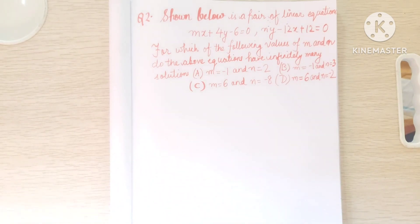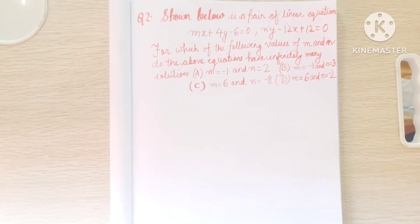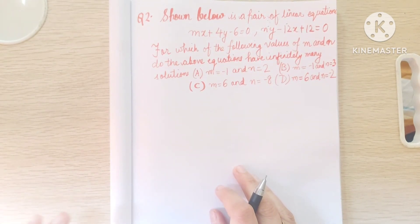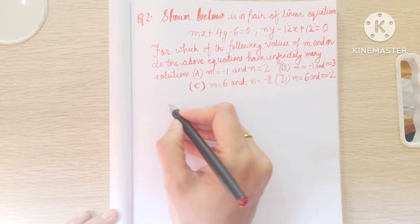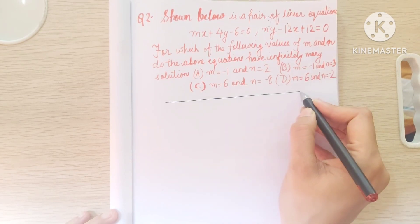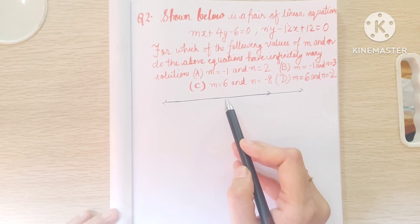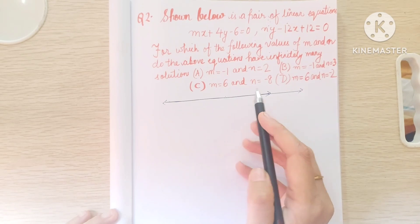Now let's start with question number 2. It says: 'Shown below is the pair of linear equations: mx plus 4y minus 6 equals 0, and ny minus 12x plus 12 equals 0. For which of the following values of m and n do the equations have infinitely many solutions?' When a pair of linear equations have infinitely many solutions, it means the two lines coincide.